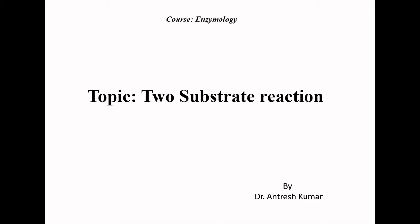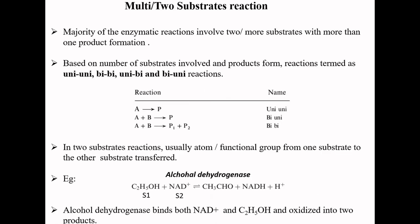In an enzymatic reaction, when one or two substrates can produce one or more products, that type of reaction is called a two-substrate or multi-substrate reaction.